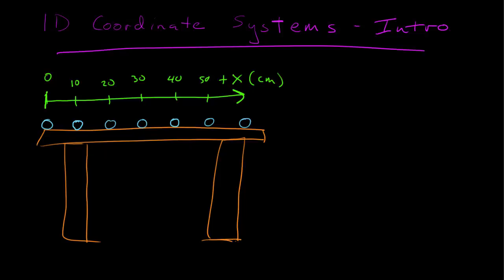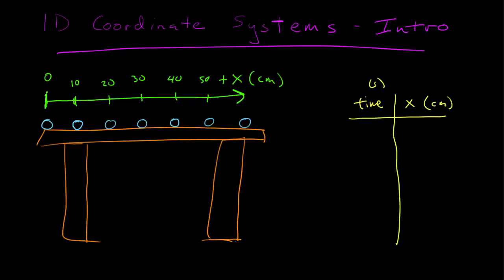Now that I've set up my ruler, I see that the ball moved 10 centimeters each second. Given where I established my coordinate system, its initial position was 0 and the next position was 10, and so on. So now I can create a tabular representation. For time in seconds, there was a position x in centimeters associated with this event. At time 0, which is where I started, it was at position 0. One second later, my coordinate system says it was at a position of 10 centimeters.